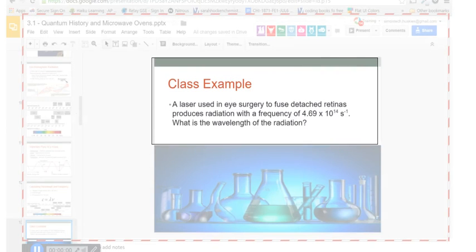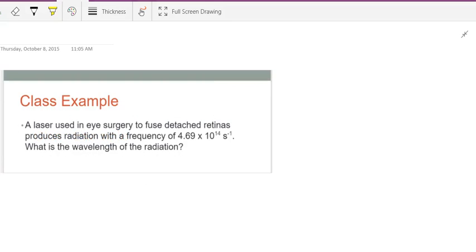So, first example. Say a laser used in eye surgery to fuse detached retinas produces radiation with a frequency of 4.69 times 10 to the 14th seconds to the negative first power, 1 over seconds, which is the units for frequency.